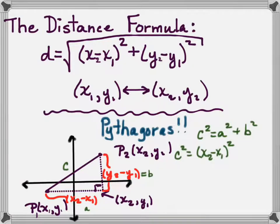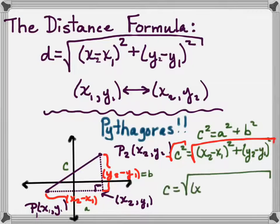So now what I'm going to do is I'm going to substitute x2 minus x1 for A and y2 minus y1 for B. Then if I take the square root of both sides I'll have C equals the distance formula.